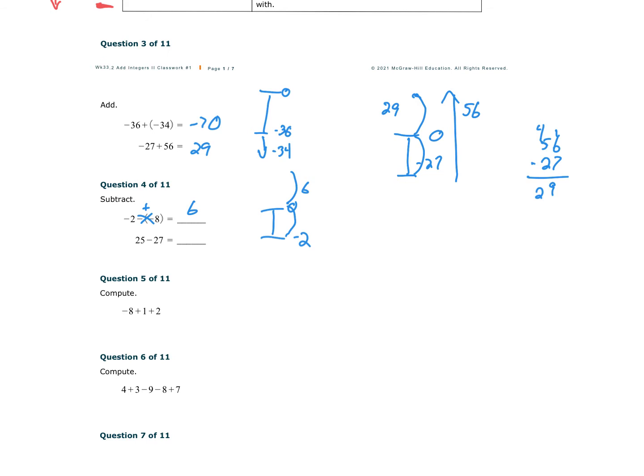We're at 25 now. So if here's 0, we're starting at 25, and we are going down 27. So we're going past 0. It takes 25 to get down there, then it takes another 2 to get down there. So the answer is negative 2. Always make sure your answer makes sense.